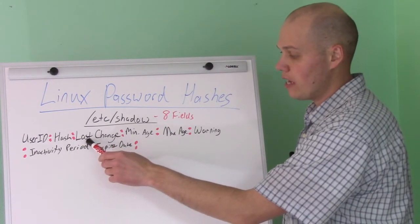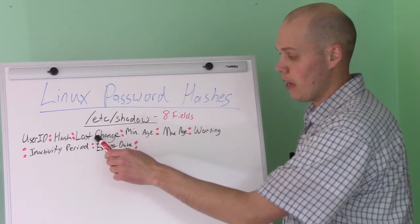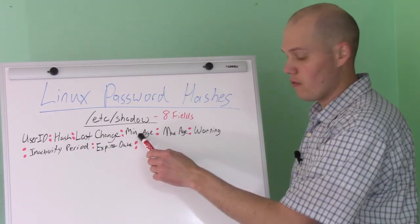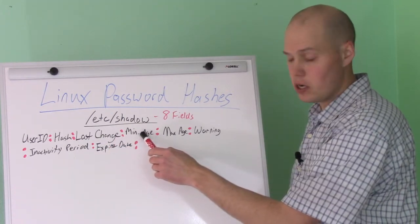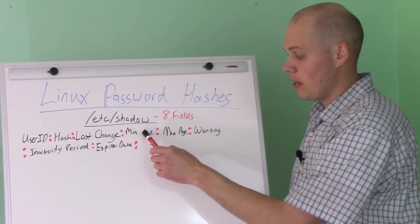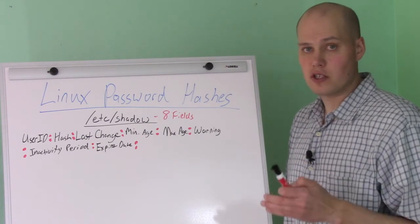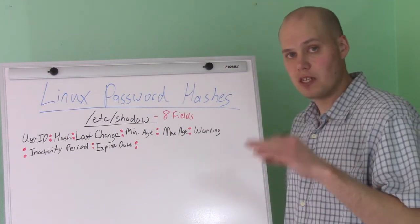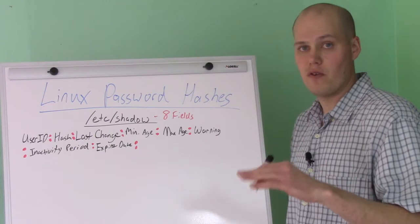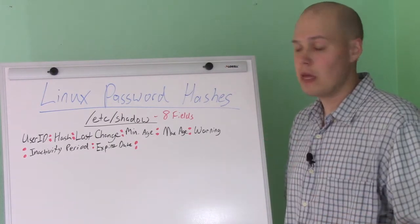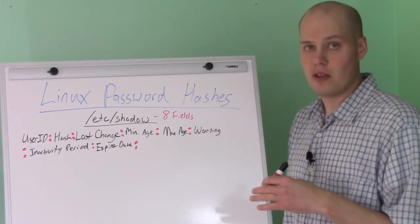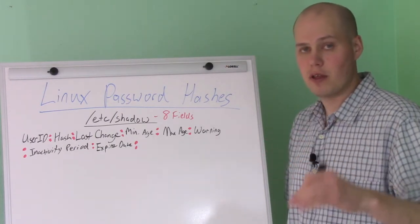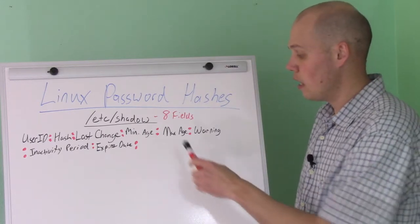The next field is the last time the password was changed for that user. Then you have the minimum age — in days, basically, you can set it so that the user has to have that password set for like four or five days before they can change it. That would prevent the user from changing their password multiple times to reuse an old password.